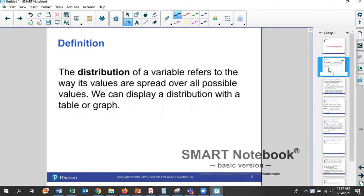Most of you guys are familiar with this, I'm sure. The distribution of a random variable refers to all the different ways that its values can be spread across all the different possible values. So we usually display a distribution with a table or a graph.